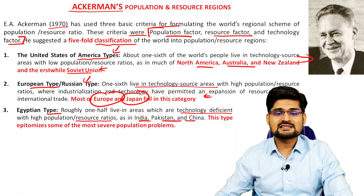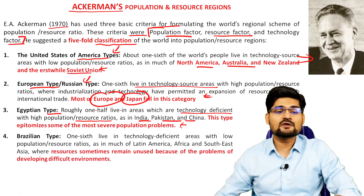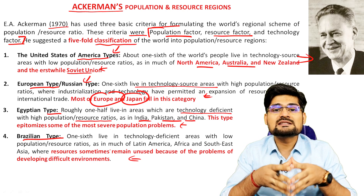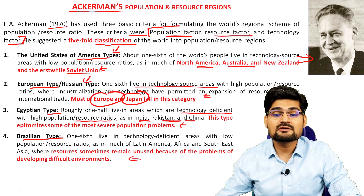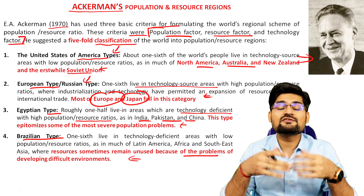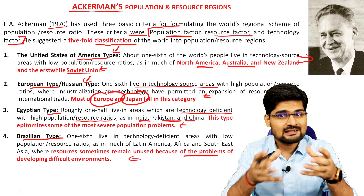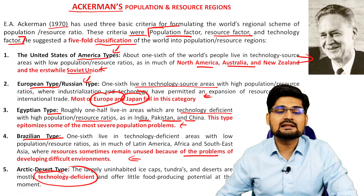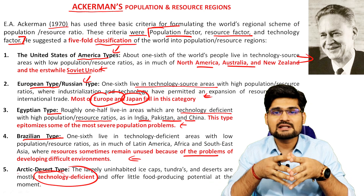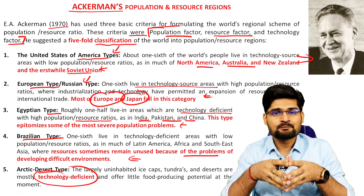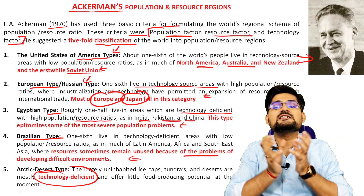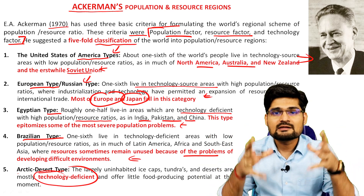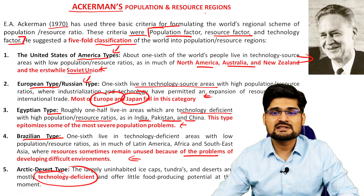The fourth type is the Brazilian type, where human resources are insufficient to use the given natural resources, and they are also dependent on technology from outside. The fifth is the Arctic-Desert type, which is completely technologically deficient, has little food, and population is on the lower side. This classification illustrates the regional disparity and imbalances existing on the world map in terms of population-resource relationships.